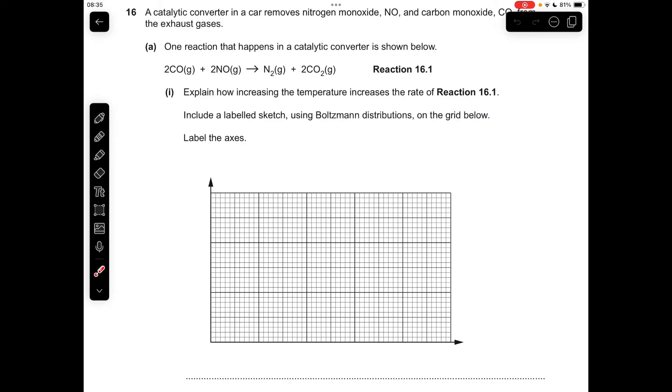So the first thing I've got to do is explain how increasing the temperature increases the rate of reaction using Boltzmann distributions. Obviously the first thing we need to do is put one Boltzmann curve on, so don't forget to label your axes. It's the number of molecules or particles on the y-axis, energy for the x-axis, and for any Boltzmann curve, it must start at the origin, and it must not touch the x-axis at the high energy, so it has to asymptote.